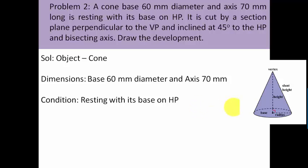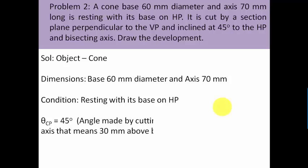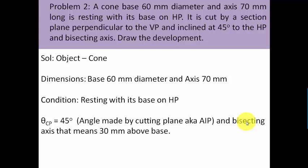Now let's look at the cutting plane details. We have a cutting plane — also called an AIP, auxiliary inclined plane — that is inclined at 45 degrees to the horizontal plane and bisects the axis. The axis length is 70 mm, so the bisecting point is 35 mm above the base and 35 mm below the apex.